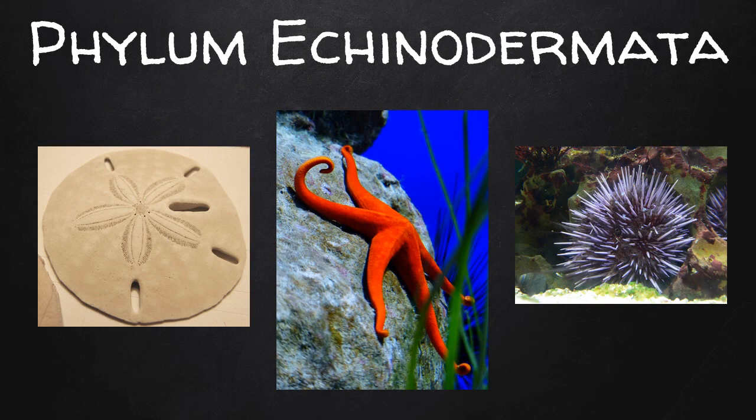Animals in phylum Echinodermata have spiny skin. These include sand dollars, starfish, and sea urchins. These animals have radial symmetry.